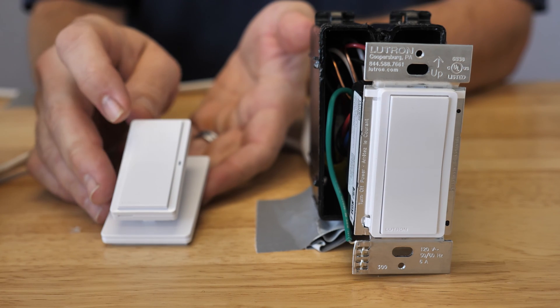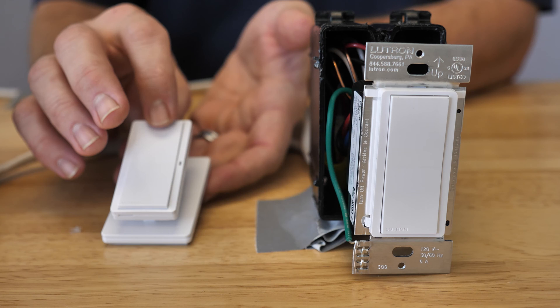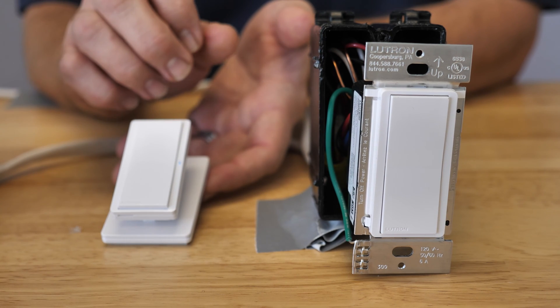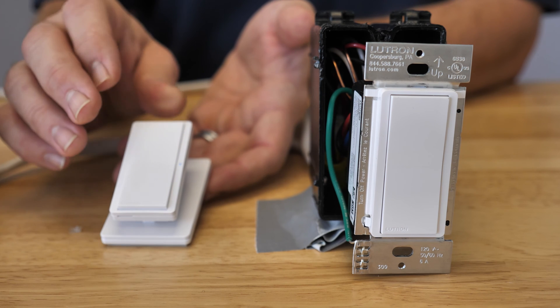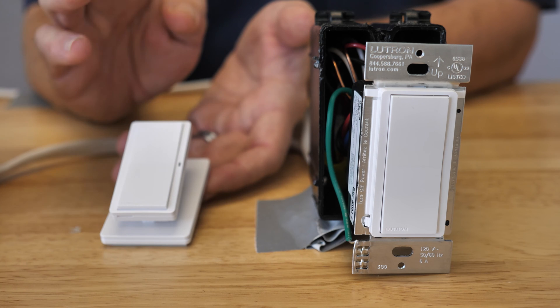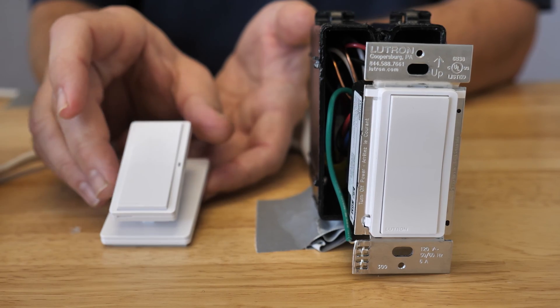Now add in the fact that we now have this paddle Pico to help us also do some of the functionality of on off control. One tap is going to give us the recalled level. A double tap is going to give us a full brightness level. Now assigning the two together is just like assigning your other Pico and Cassetta related switches. So let's go ahead and do that now.